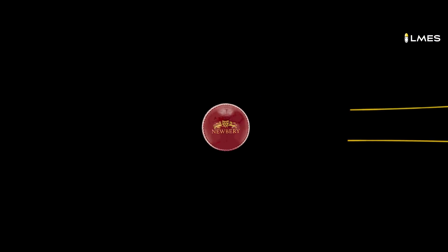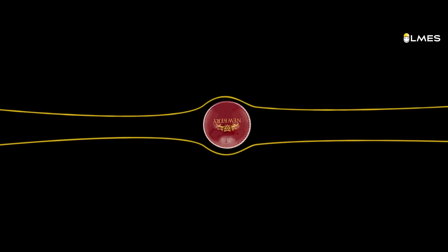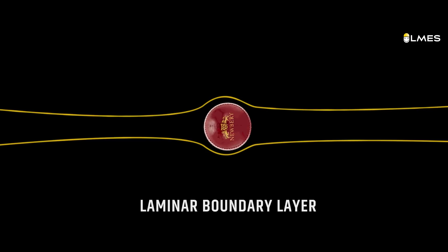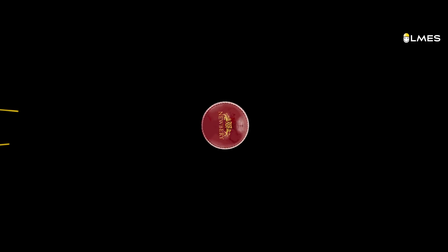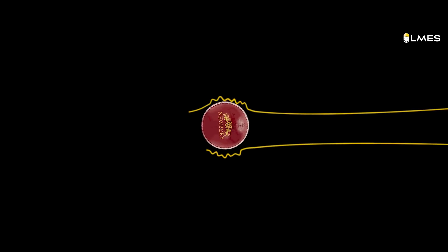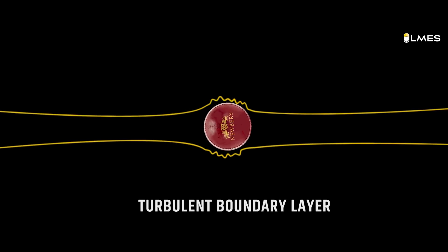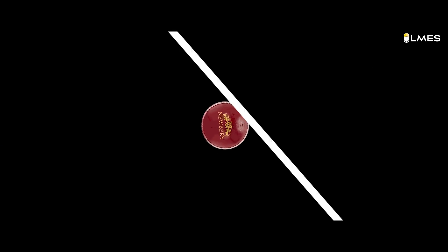This boundary layer has 2 types. The first type involves smooth and hard airflow — this is the laminar boundary layer. The second type involves a turbulent air layer — this is the turbulent boundary layer.